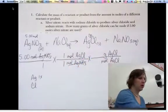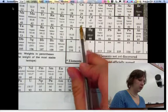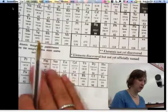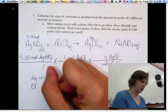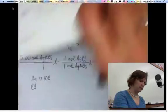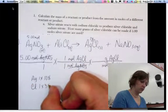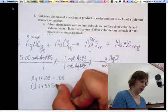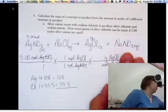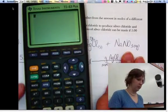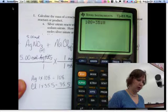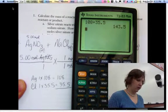So I look on my periodic table. Here's silver, 107.88. In our class, we round to three sig figs, so we're going to round to 108 for silver. And for chlorine, 35.5. 108, 35.5. Calculator. I'm going to add those together. 108 plus 35.5 equals 143.5.